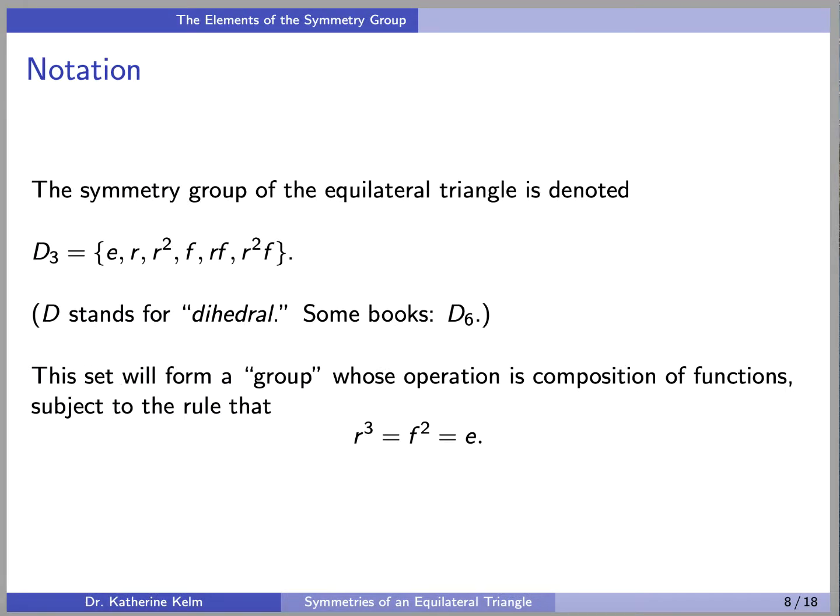Okay, so the symmetry group of the equilateral triangle is denoted D3, and it consists of these six elements: E, R, R squared, F, RF, and R squared F, which correspond to the moves from home position to each of the possible ending positions for the triangle.